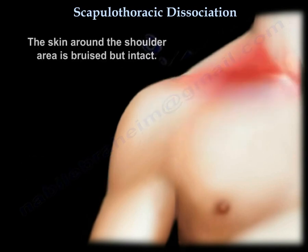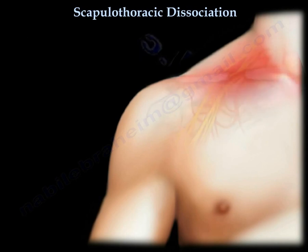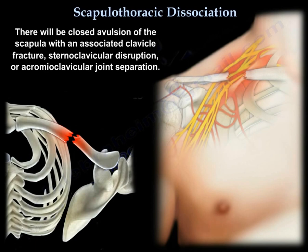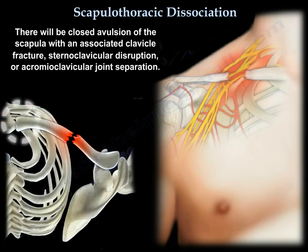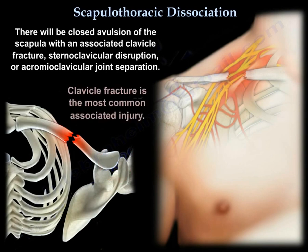The skin around the shoulder area is bruised but intact. There will be closed avulsion of the scapula with an associated clavicle fracture, sternoclavicular disruption, or acromioclavicular joint separation. Clavicle fracture is the most common associated injury.